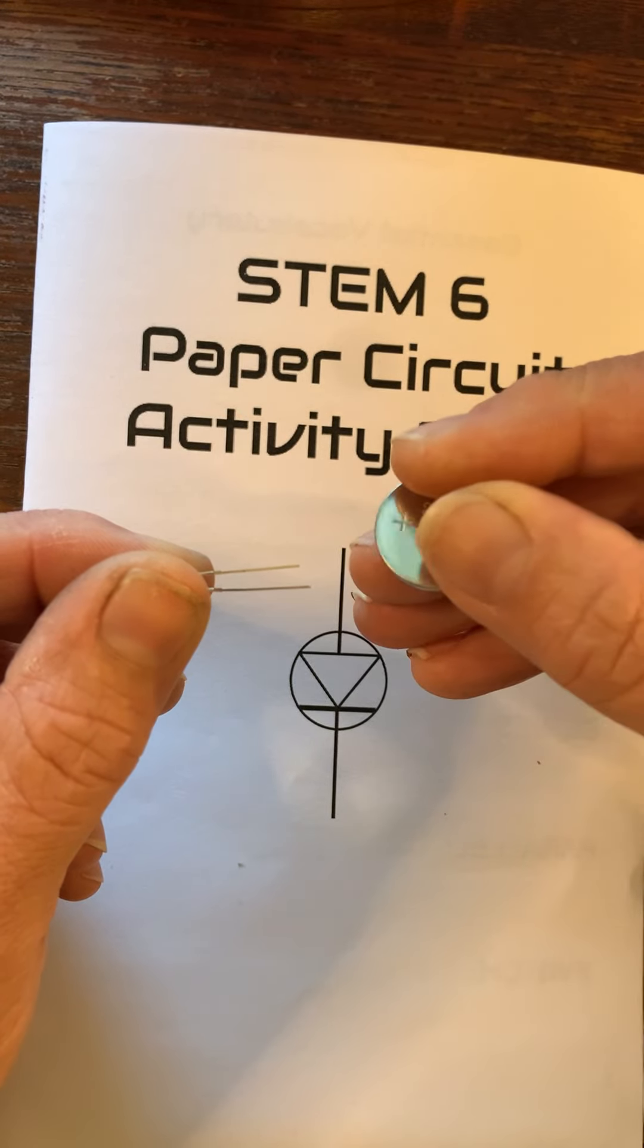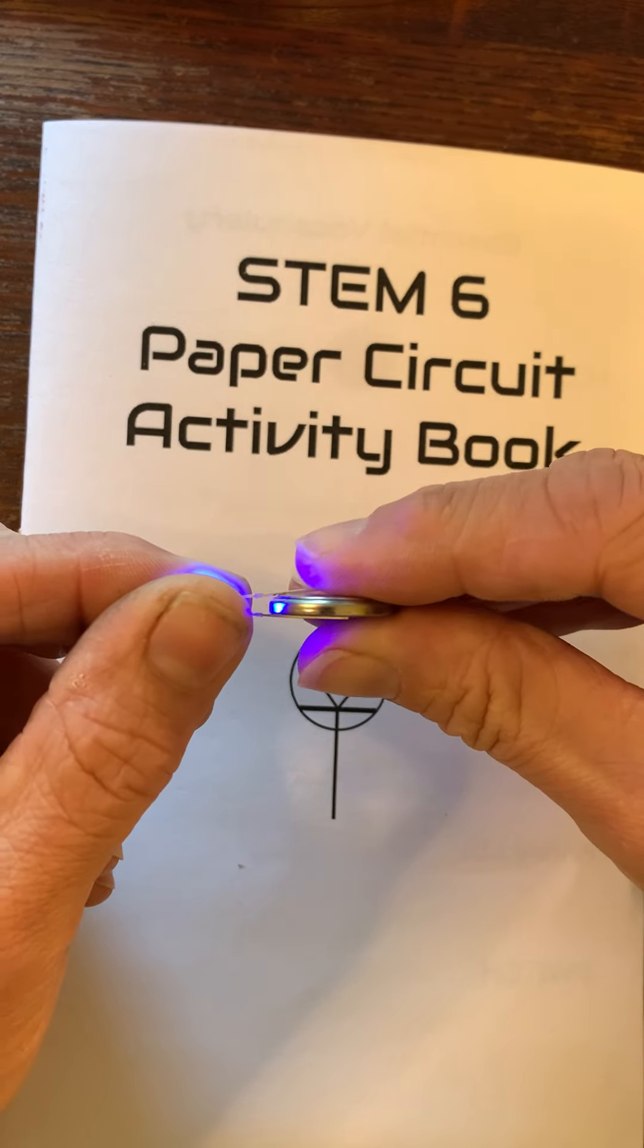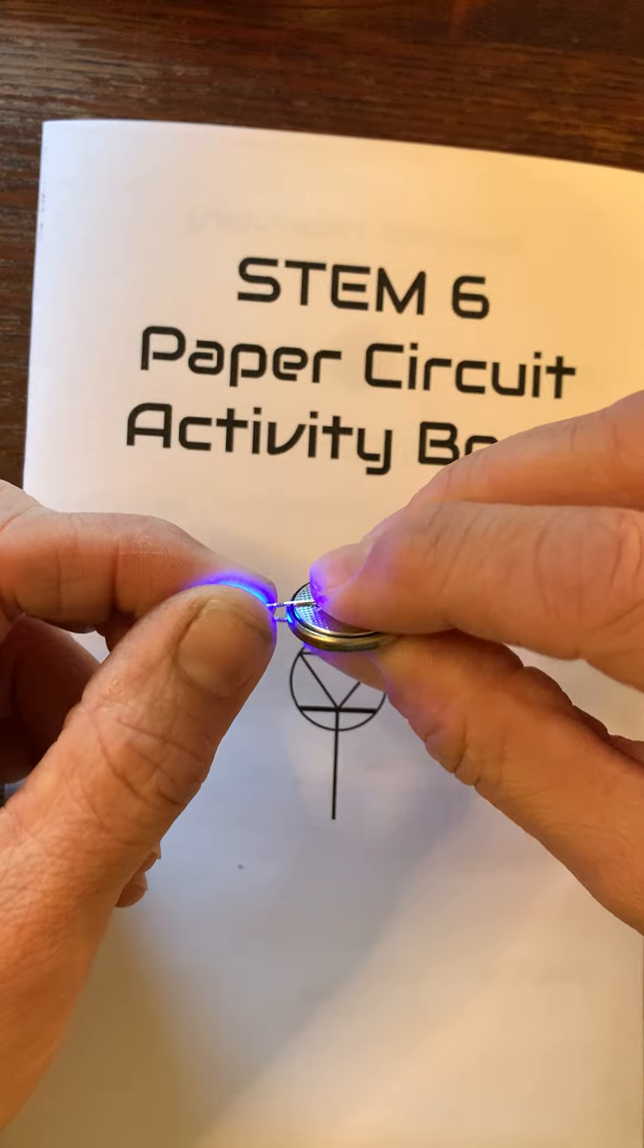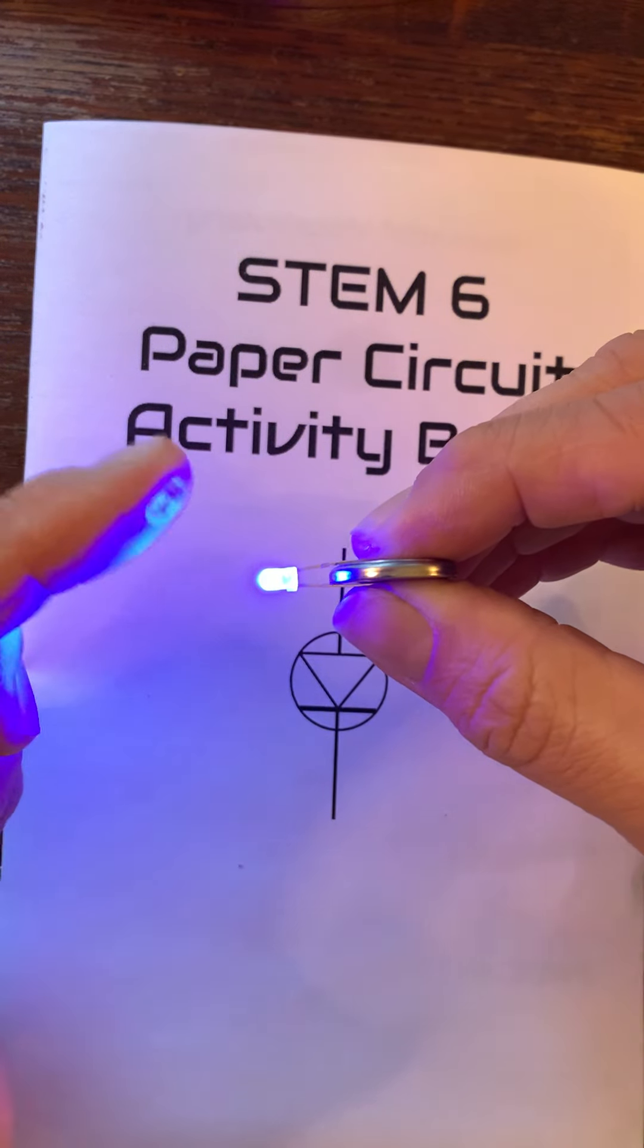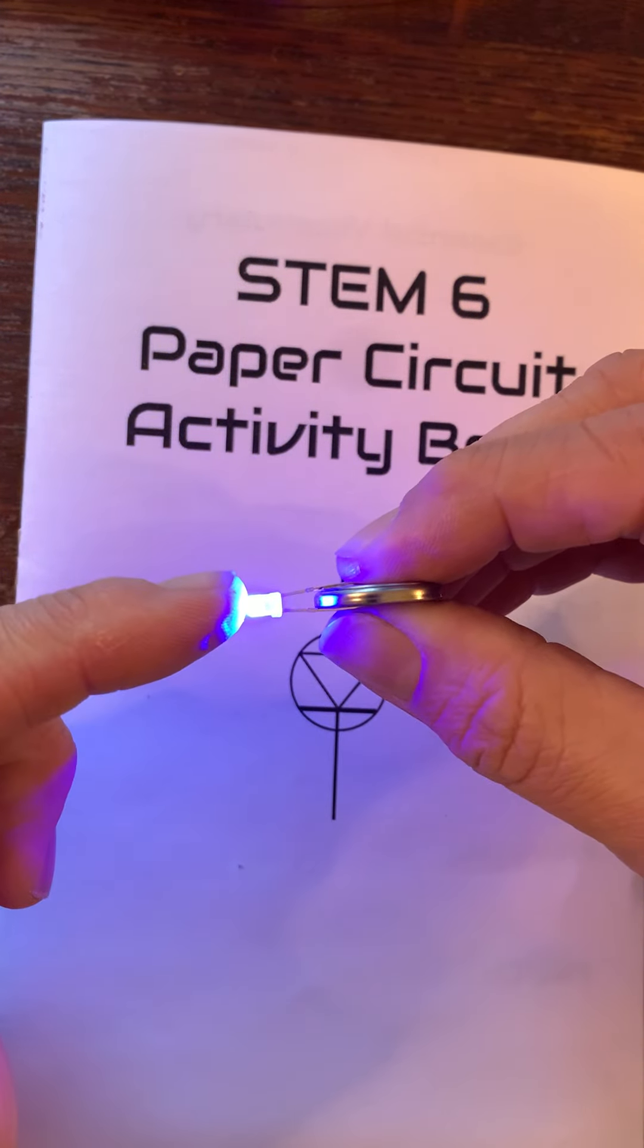Okay that doesn't work. I'm going to flip the battery around. I'm going to stick it so one leg is on each side of the battery and it lights. That's because it is making a complete loop circuit.